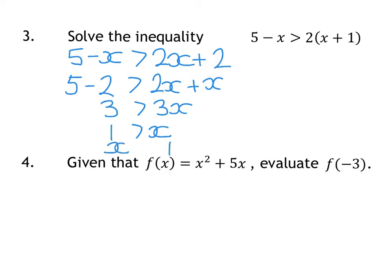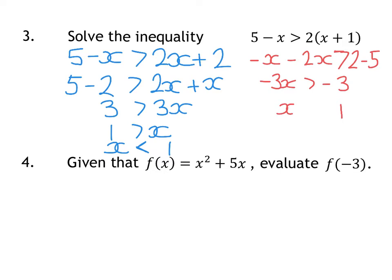You can rewrite that as x is less than 1, keeping the arrow pointing to the x. The alternative method — keeping letters left, numbers right — gives negative x take away 2x is greater than 2 minus 5, tidying up to minus 3x is greater than minus 3. Dividing by negative 3, the double negative gives positive 1, but because you divided by a negative number you must flip the arrow, giving x is less than 1. Both methods give the same answer. Personally I prefer keeping letters positive so you don't need to worry about flipping the arrow.